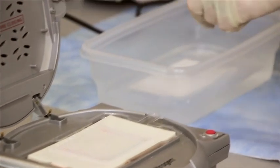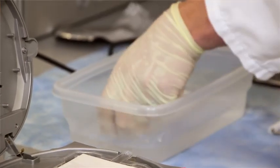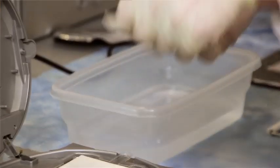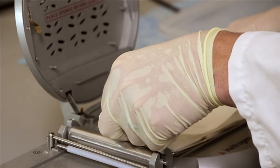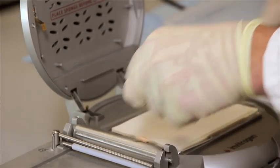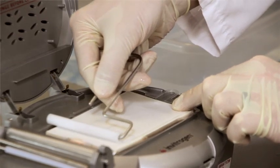Okay, and then we're going to pre-wet our one filter paper. Put that on top. Then use our roller to roll out any bubbles.